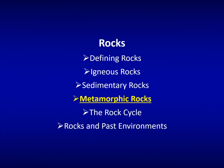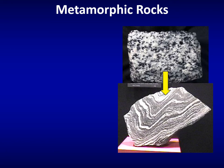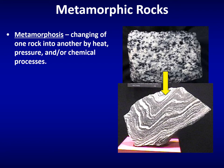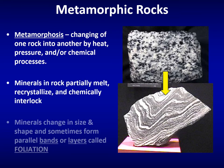Metamorphic rocks are rocks formed from heat and pressure. Plate tectonic and gravitational forces, combined with heat from nearby magma, cause the minerals in the rock to partially melt and recrystallize into their most compact form. For example, diorite's mineral grains recrystallize into the layered rock called gneiss. These bands or layers are called foliation, and gneiss is an example of a foliated metamorphic rock.